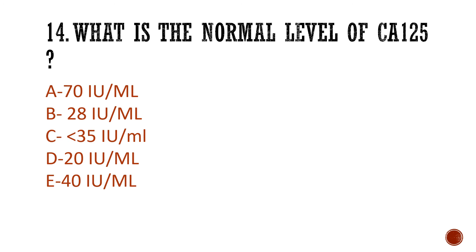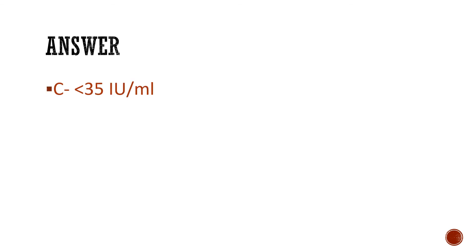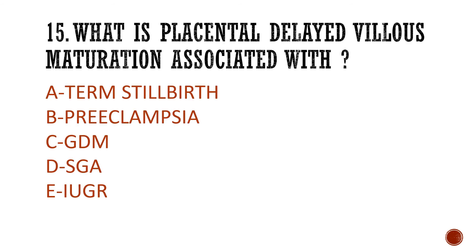Question 14: What is the normal level of CA-125? Is it A) 70, B) 28, C) 135, D) 20, or E) 40? The answer is under 35 international units per millilitre.